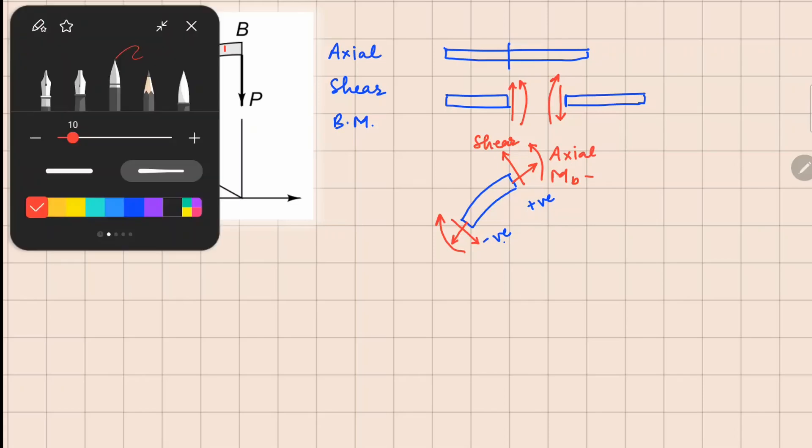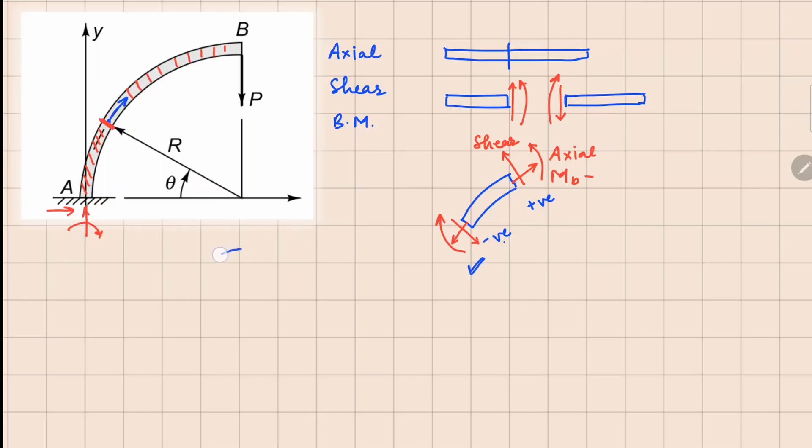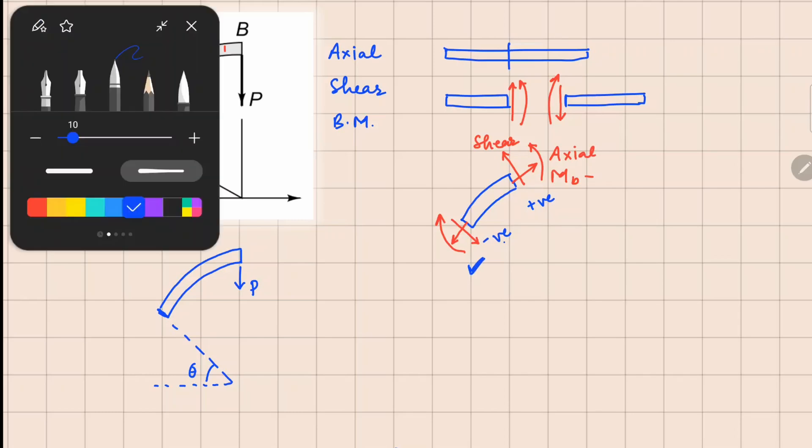But if I draw the top part here, let me draw this part separately here. So the top one is somewhere like this. And this angle right here is your angle theta from here. There was a force applied P on this side. Now this face that has opened up new, this will be a negative face based on our convention.